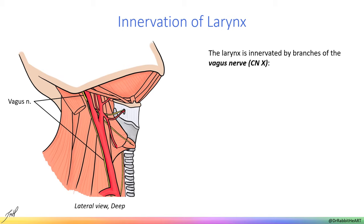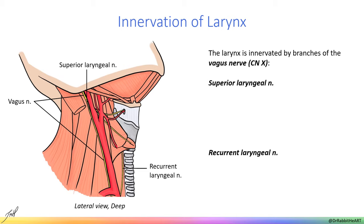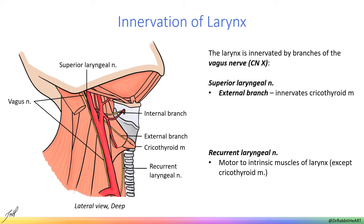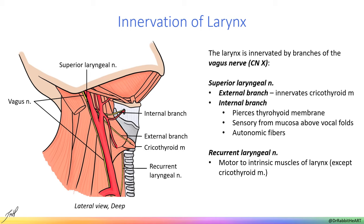The larynx is innervated entirely by the vagus nerve, which splits into the superior and recurrent laryngeal nerves. The superior laryngeal nerve further divides into internal and external branches. The recurrent laryngeal nerve innervates all muscles of the larynx except the cricothyroid muscle, which is innervated by the external branch of the superior laryngeal nerve. Sensory information above the vocal folds is conducted by the internal branch of the superior laryngeal nerve, while sensory signals below the vocal folds are transmitted via the recurrent laryngeal nerve.